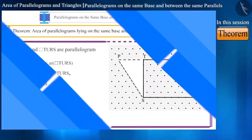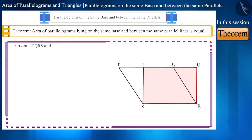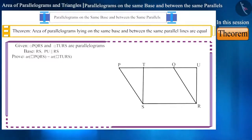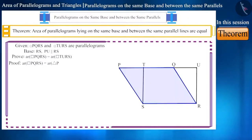Let us see the mathematical proof for this. Let us consider the quadrilaterals used in the activity. We have two parallelograms — quadrilateral PQRS and quadrilateral TURS. These two parallelograms lie on the same base RS and between the same parallel lines PU and RS. We have to prove that their areas are equal. We represent the area as AR. Looking at the figure, parallelogram PQRS is made up of triangle PTS and quadrilateral TQRS combined together. That is: Area(PQRS) = Area(triangle PTS) + Area(quadrilateral TQRS).